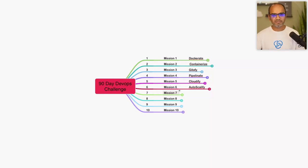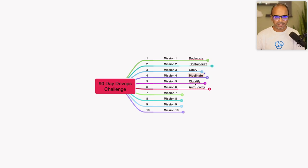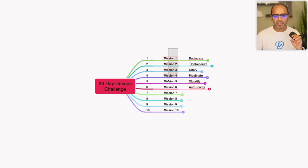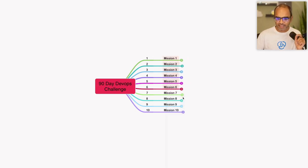Welcome back to the 90 Days Challenge. This is Gaurav Shah from School of DevOps. We are on mission number seven. So far we've started with Docker, talked about CI/CD for a couple of weeks, then Git pipelines, completed a mission on building CI pipelines, then covered cloud with two missions — one on building infrastructure, one on auto-scaling.